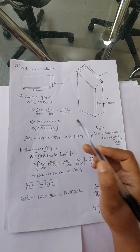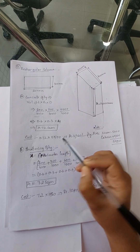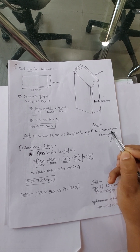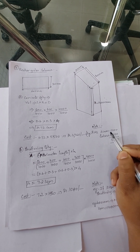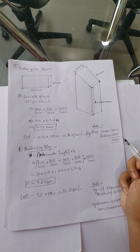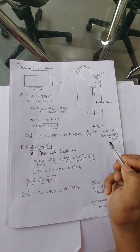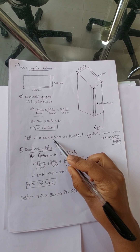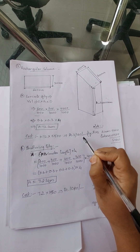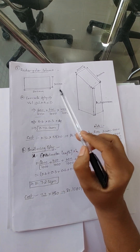To find the cost, we take this quantity of 0.72 cubic meters and multiply by the rate of 5500. The rate of 5500 is taken because 1 cubic meter of RMC costs 5000 and the labor for preparation is 500, totaling 5500. So 5500 × 0.72 = rupees 3960 is required for the concrete of this rectangular column.